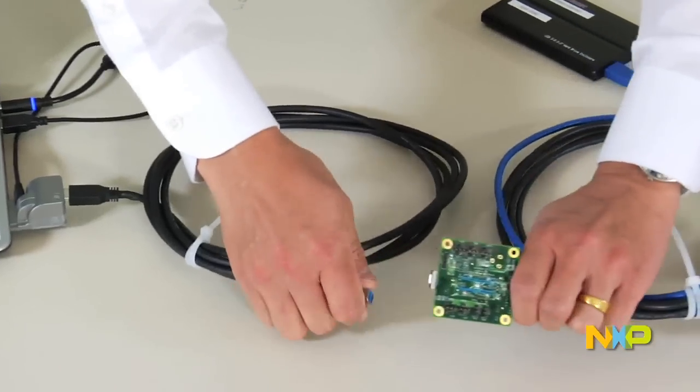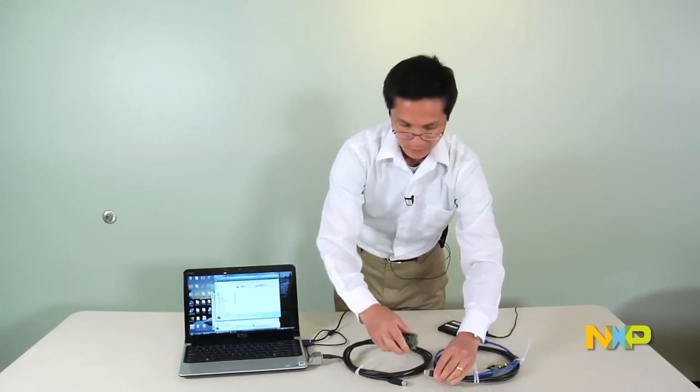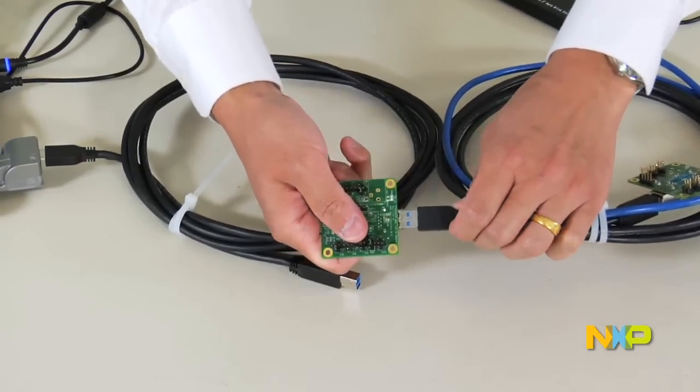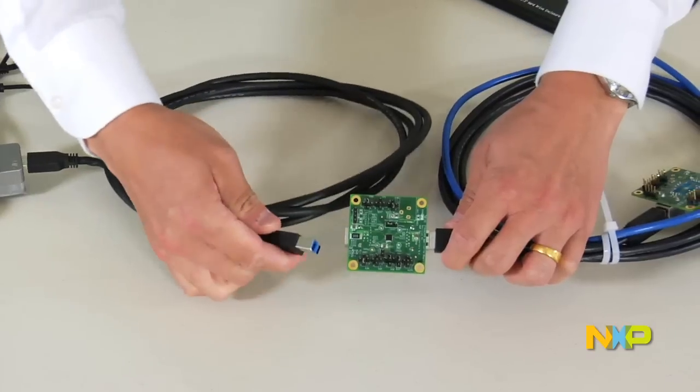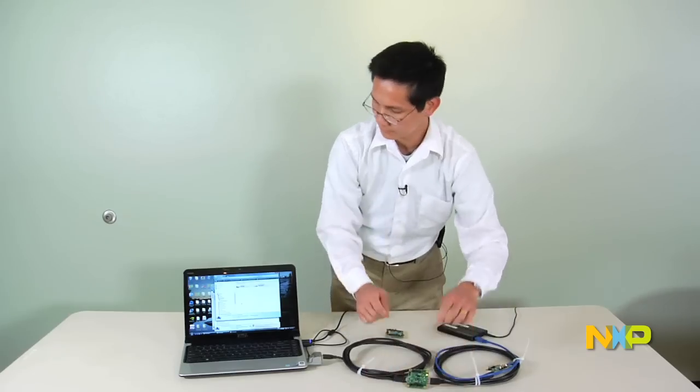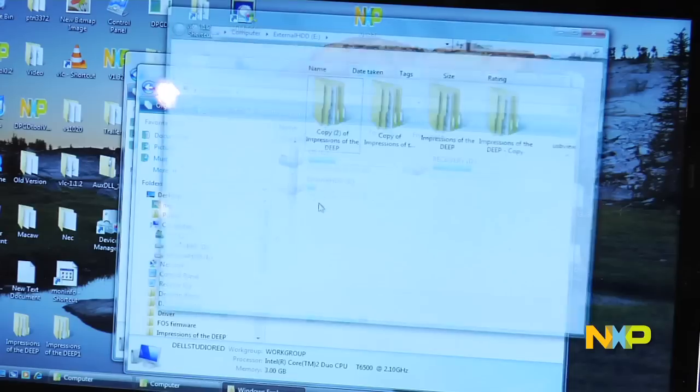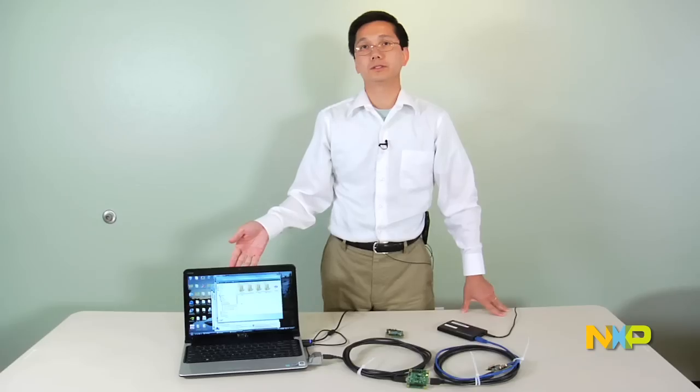Now, we're going to replace this section of the bridge board with our USB 3.0 redriver application board. And right away, you can see Windows sees the hard disk drive content already. So now, totally, we have 7 meter cable working with an external USB hard disk drive.